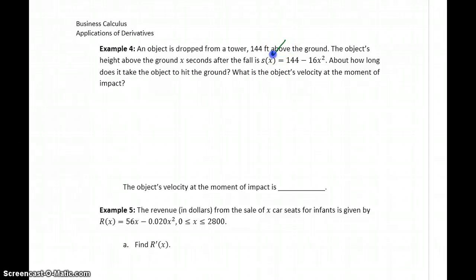What we're given here, this function lowercase s of x, is a position function. It's a function that tells us the position of our object, in this case height above the ground, after x seconds have passed. If what we're interested in first is about how long does it take the object to hit the ground, what we want to do is solve when is our function s of x equal to zero.